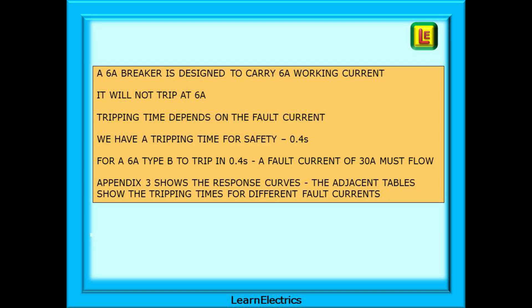A quick summary then. A 6 amp breaker is designed to carry 6 amps as a working current. It will not trip at 6 amps. The tripping time depends on the fault current. And we hope to achieve a tripping time for safety of 0.4 seconds. For a 6 amp Type B circuit breaker to trip in 0.4 seconds a fault current of 30 amps must flow. And appendix 3 shows the response curves and the adjacent tables show the tripping time for different fault currents.